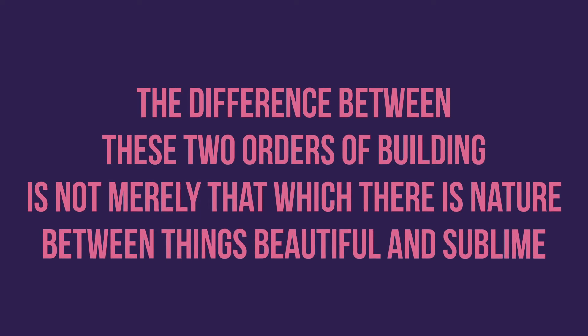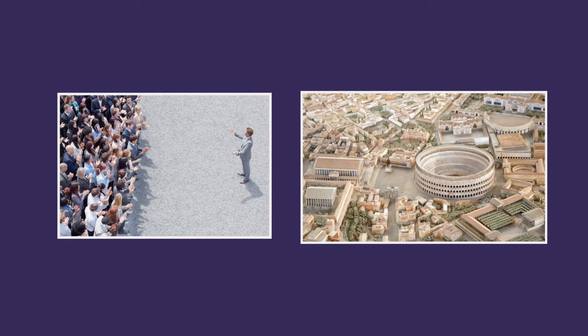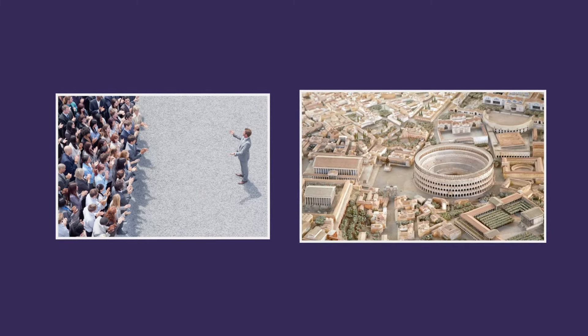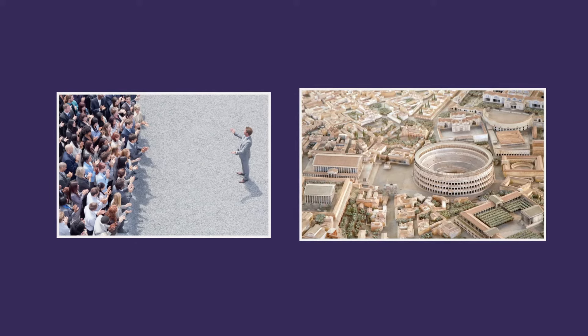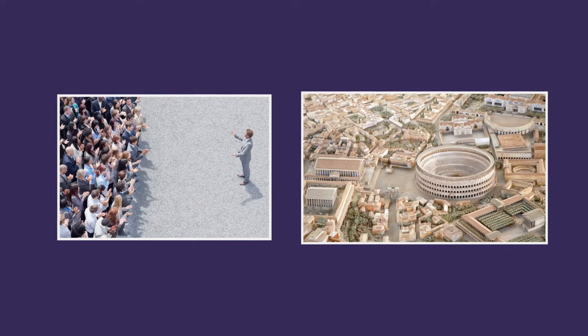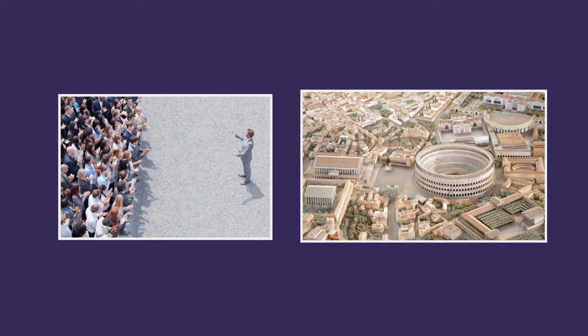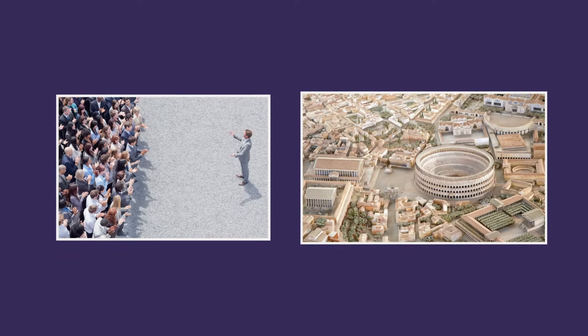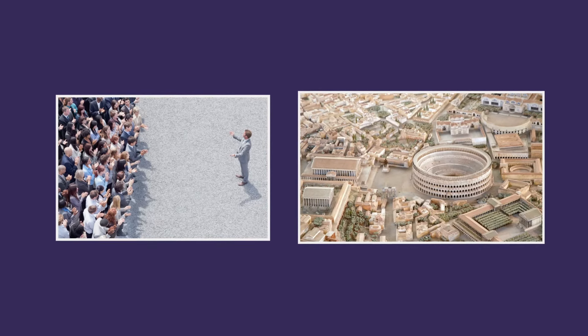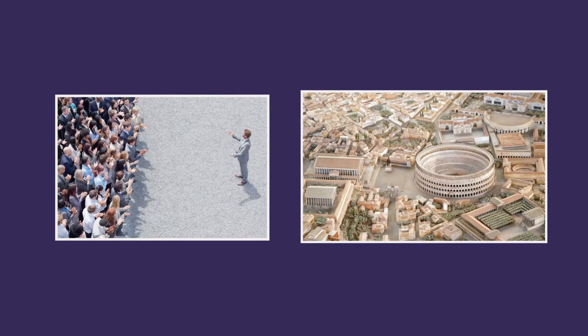Now, the difference between these two orders of building is not merely that which there is in nature between things beautiful and sublime. All buildings show man either as gathering or governing, and the secrets of his success are knowing what to gather and how to rule. These are the two great intellectual lamps of architecture: the one consisting in a just and humble veneration for the works of God upon the earth, and the other in an understanding of the dominion over those works which has been vested in man.